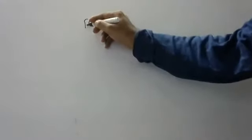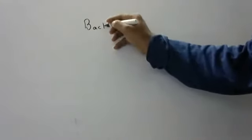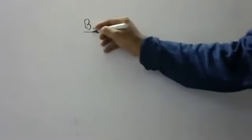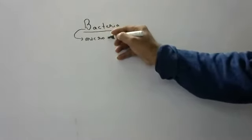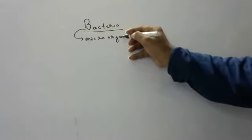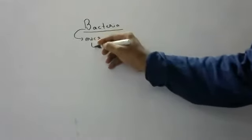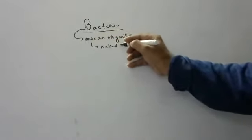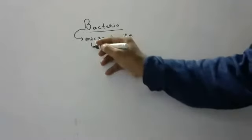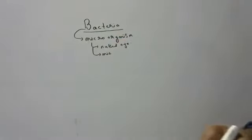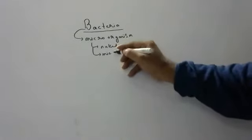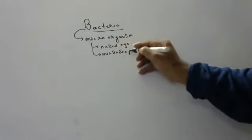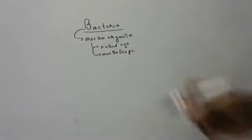Today we are going to discuss about bacteria. Bacteria is a microorganism. Microorganisms are those which we cannot see with our naked eye — we must compulsorily use either a compound or electron microscope. With a compound microscope we can see bacteria cells; for viruses you need different microscopes. Things we can see only with the help of microscopes are called microorganisms — they are very, very small.